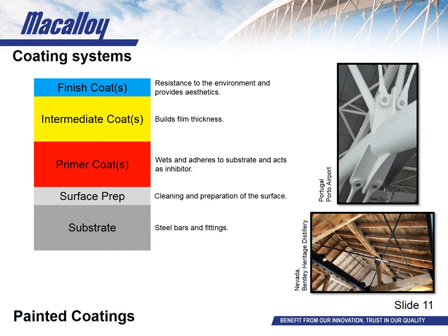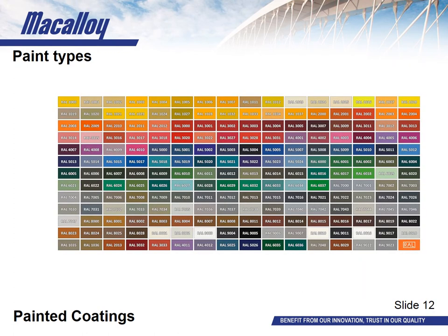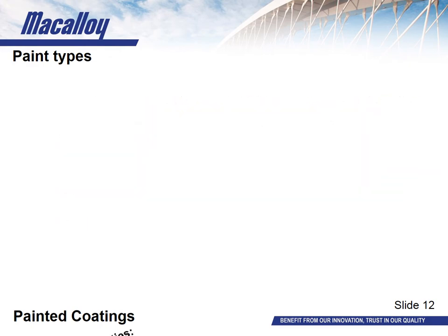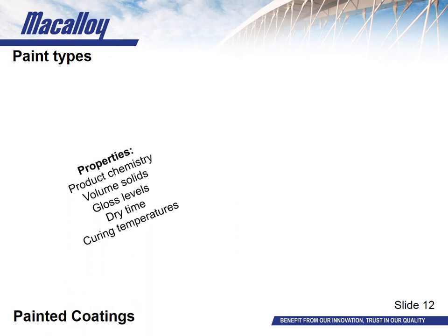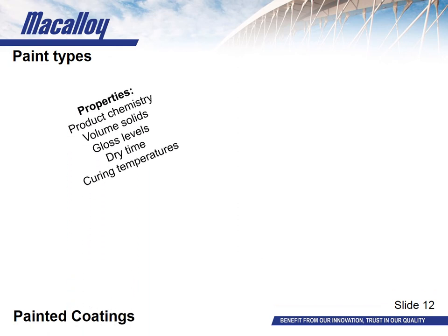The top coat provides the aesthetic appearance and quality of the product. Here is an example of a RAL chart showing 207 colour variants — there are thought to be in excess of 1800 RAL variants. Paint systems vary and can have different properties including the product chemistry, volume solids, gloss levels, dry time and curing temperatures. The type of paint is generally specified by the requirements of the application and environment, and the appropriate system specification should be determined by the client.